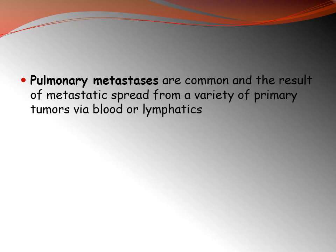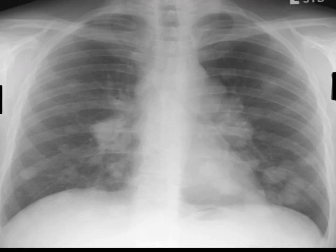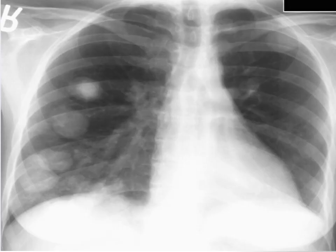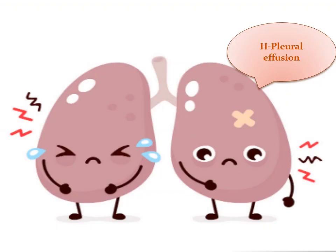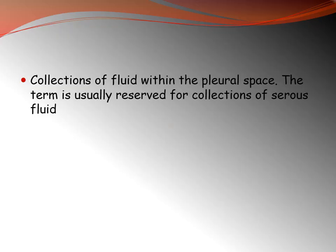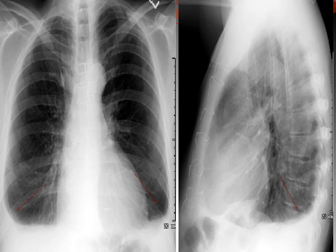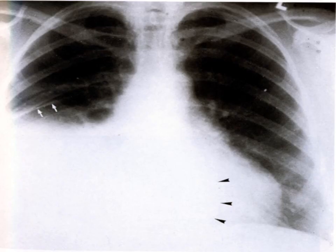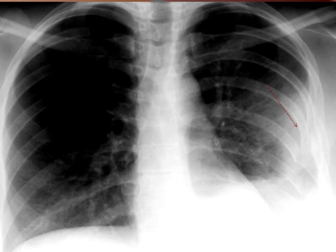Pulmonary metastases are common and result from metastatic spread via blood or lymphatics. They may be multiple or solitary, calcified or non-calcified, and may appear as cannonball lesions when very large. Pleural effusion means collection of fluid within the pleural space — the term is usually reserved for a collection of serous fluid. Findings on x-ray include marked pleural effusion on one side, and massive pleural effusion that can cause mediastinal shift.